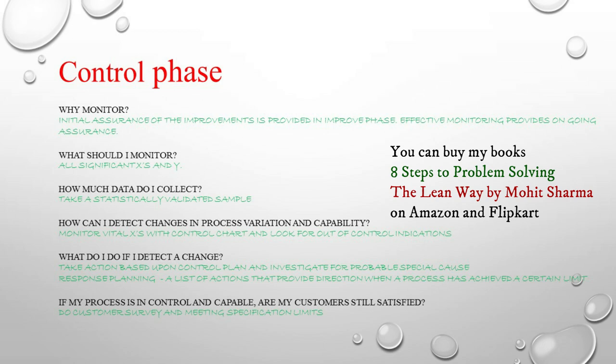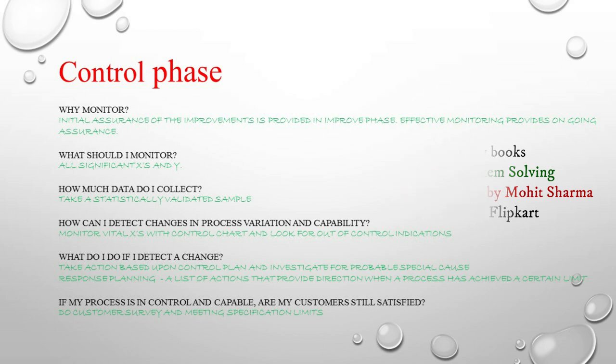How much data should we collect every day? We need to take statistically validated samples and collect data based on that. The next question is: how can I detect changes in process variation and capability? When we monitor the vital X's with control charts and see anything going out of control, that is when we can identify changes in process variation and capability.